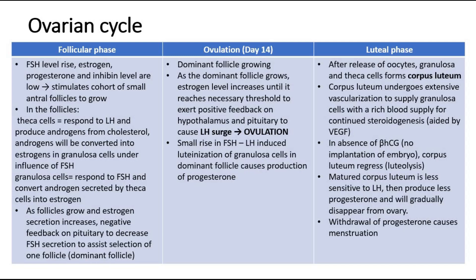Looking further into the ovarian cycle, the three phases are follicular, ovulation, and luteal. In the follicular phase, the FSH level will increase while oestrogen, progesterone, and inhibin levels are low. This will stimulate a cohort of small antral follicles on the ovaries to grow.